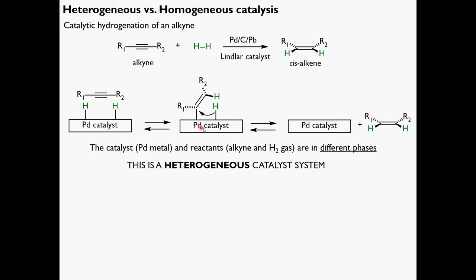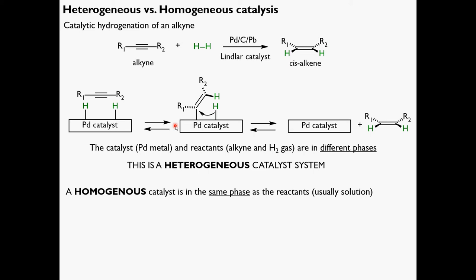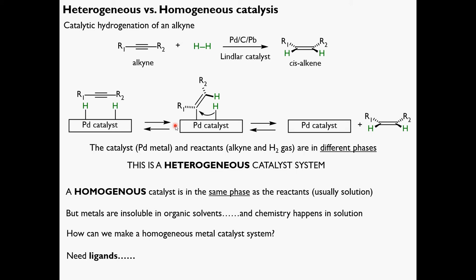The active site of a heterogeneous palladium catalyst is not immediately well-defined; it depends on the nature of the solid surface. Much easier is to use a homogeneous system in which all reactants are in the same phase — usually solution phase. We can dissolve our catalyst and substrates in solution and reactions take place. That's a lot easier to study and control. The problem is that a lump of palladium metal is not soluble in an organic solvent, so we need a special set of organic molecules called ligands.